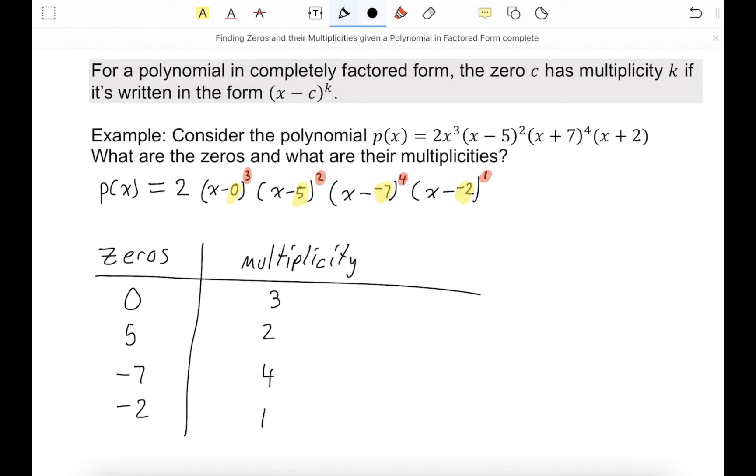The multiplicity will determine the behavior of the polynomial at the zero and about the zero. Let's see what you notice here.